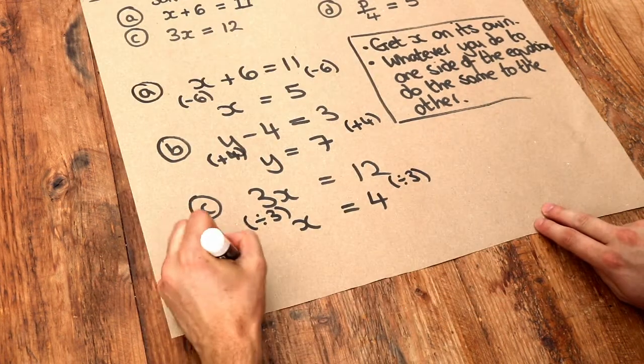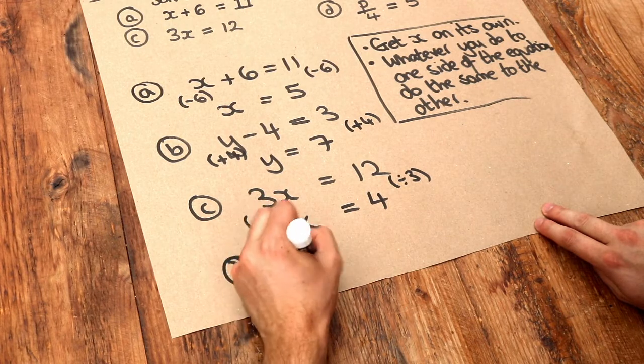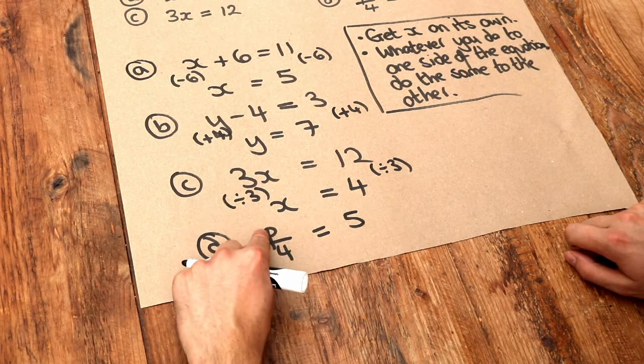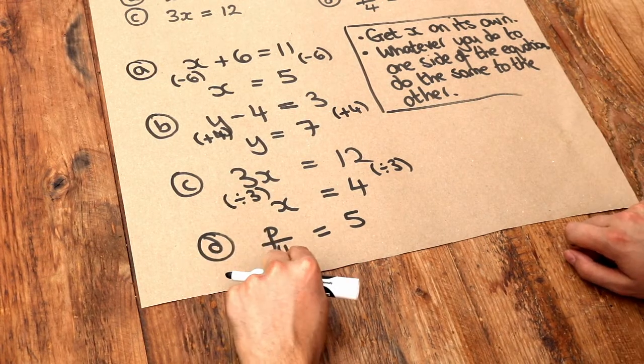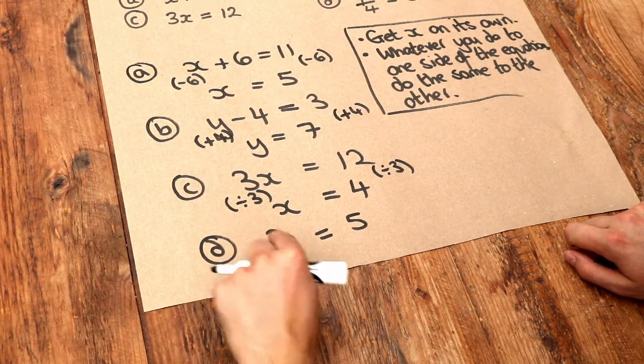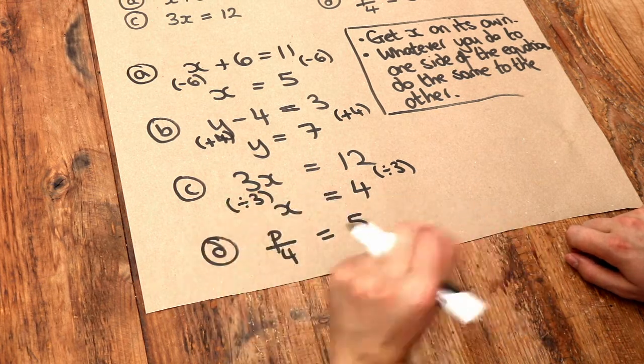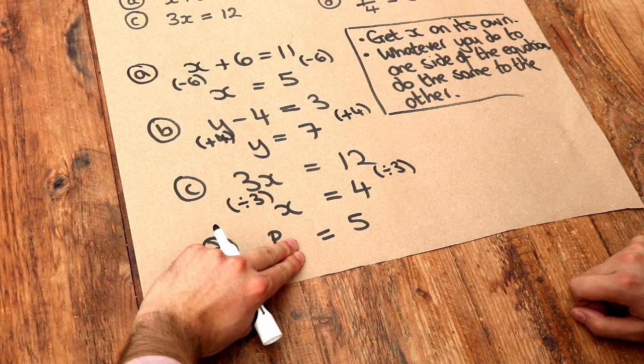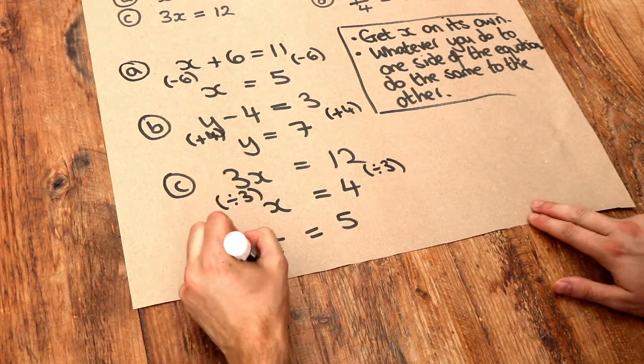And the very last one, p over 4 is equal to 5. What's happening to the p here? It's being divided by 4. Remember, over 4 just means divide by 4. So we want to cancel out that over 4 to just leave p. What's the opposite of dividing by 4? Well, it's timesing by 4.